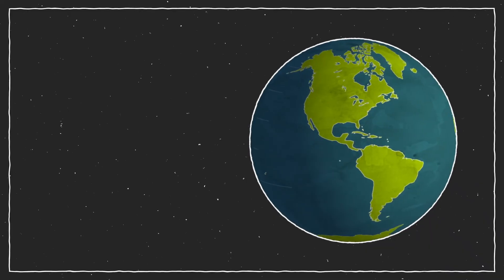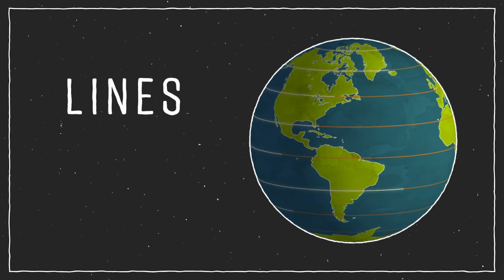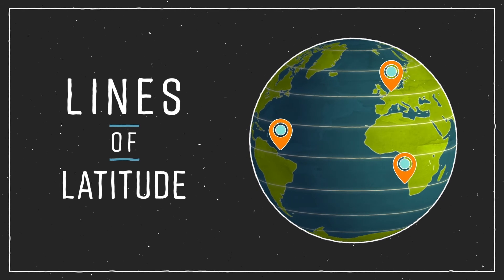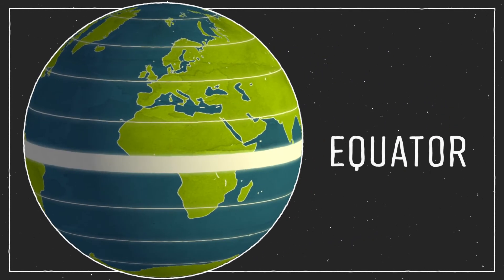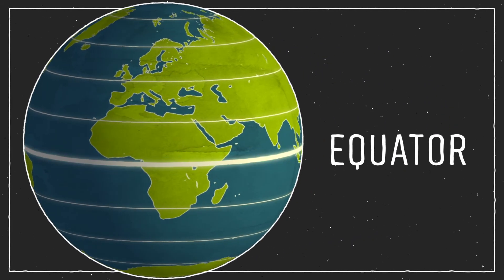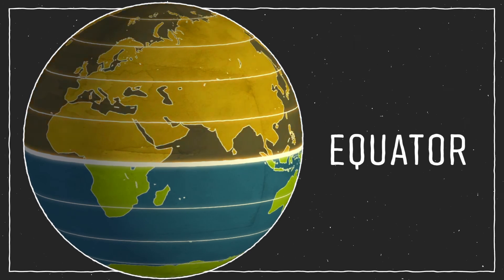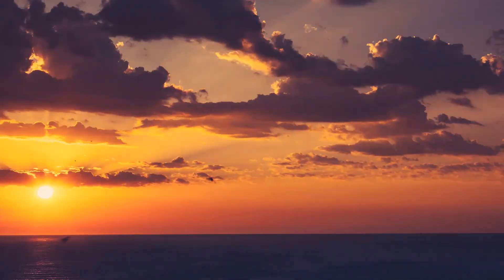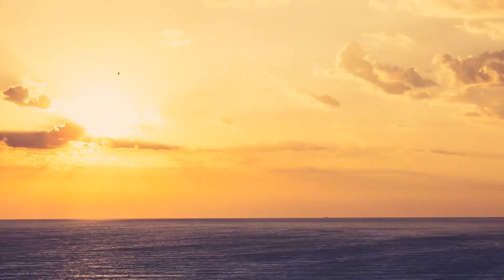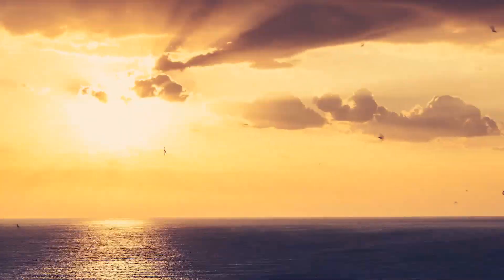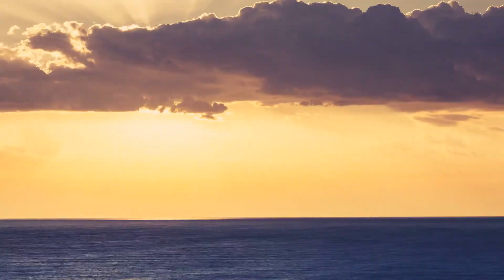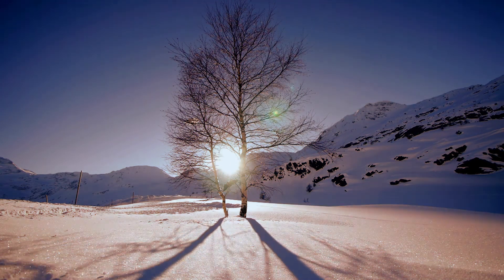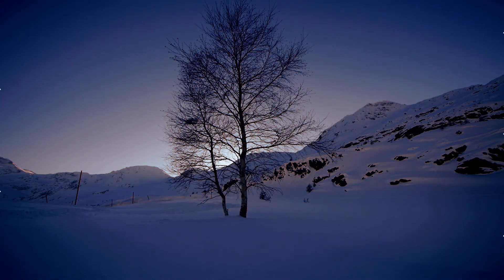We use imaginary lines called lines of latitude to help us find specific points on the Earth. This one is the equator. It divides the Earth into the northern and southern hemispheres. Biomes near the equator get about the same amount of sun in every season and are usually pretty warm. The North Pole, at the top of the Earth, gets much less sunlight and is much colder.